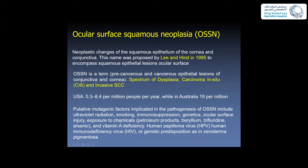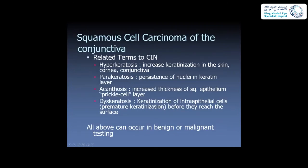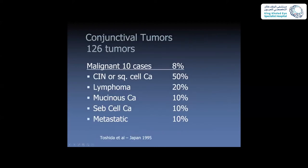Different mutagenic factors are implicated in the pathogenesis of OSSN. Related terms include CINN — hyperkeratosis is increased keratinization in the cornea and conjunctiva; parakeratosis is persistent nuclei in the keratin layer; acanthosis is increased thickness of the epithelium; and dyskeratosis is premature keratinization before reaching the surface. These are usually present to some degree with changes of OSSN. In a review of 126 conjunctival tumor cases, CINN is the most common.